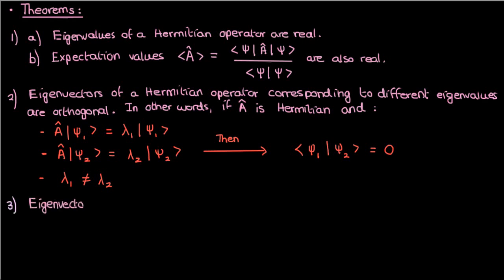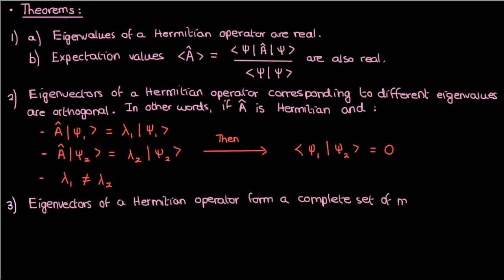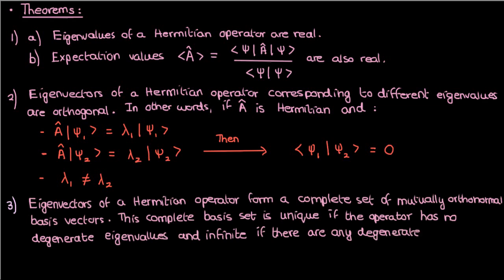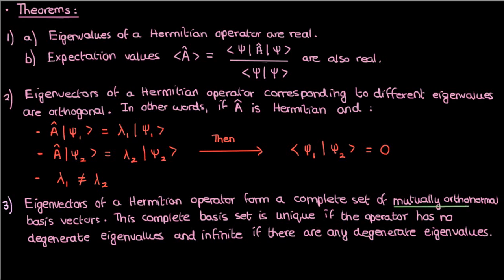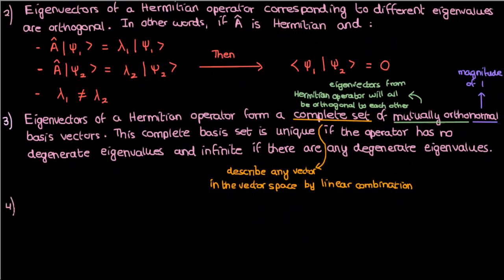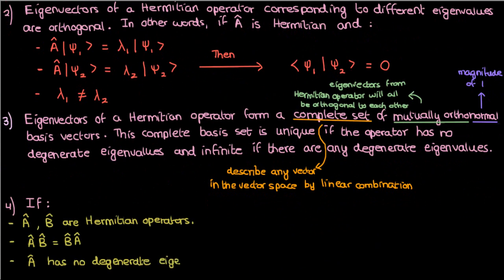The third theorem states that the eigenvectors of a Hermitian operator form a complete set of mutually orthonormal basis vectors. This complete basis set is unique if the operator has no degenerate eigenvalues and infinite if there are any degenerate eigenvalues. A mutually orthonormal complete set just means that the eigenvectors from a Hermitian operator will all be orthogonal to each other, have a magnitude of 1, and be able to describe any other vector in the entire vector space by linear combination. Theorem 4 states that if a-hat and b-hat are both Hermitian operators that commute, with a-hat having no degenerate eigenvalues, then every eigenvector of a-hat is also an eigenvector of b-hat.